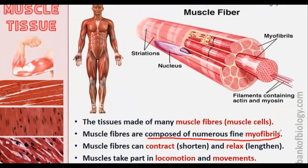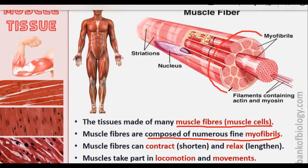Myofibrils is a word used specifically for muscles. The tissue is made up of many muscle cells, also called muscle fibers. Each of our muscles is made up of many muscle cells or muscle fibers, and the muscle fibers are made up of many short, numerous myofibrils. You can see in this diagram that this is a muscle fiber, and inside the muscle fibers, myofibrils are tightly packed, forming a structured arrangement.